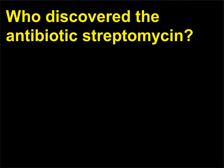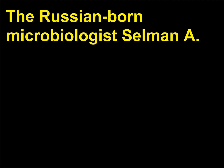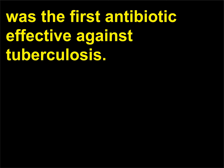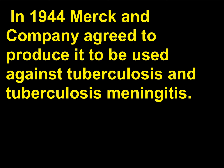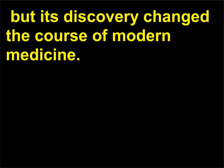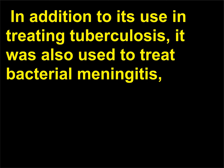Who discovered the antibiotic streptomycin? The Russian-born microbiologist Selman A. Waksman, 1888–1973, discovered streptomycin in 1943. Streptomycin was the first antibiotic effective against tuberculosis. In 1944, Merck and Company agreed to produce it to be used against tuberculosis and tuberculous meningitis. Streptomycin ultimately proved to have some human toxicity and was supplanted by other antibiotics, but its discovery changed the course of modern medicine. In addition to its use in treating tuberculosis, it was also used to treat bacterial meningitis.